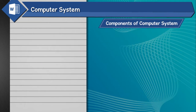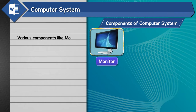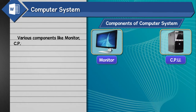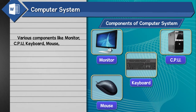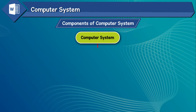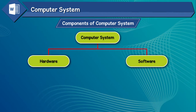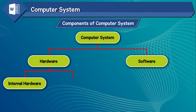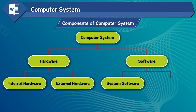Components of Computer System. Various components like monitor, CPU, keyboard, mouse, Windows 10, etc., all work together to form a computer system. A computer system is divided into hardware and software. Hardware is further divided into internal hardware and external hardware, and software into system software and application software.